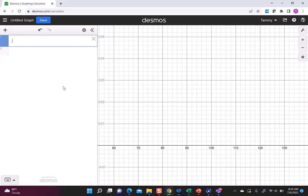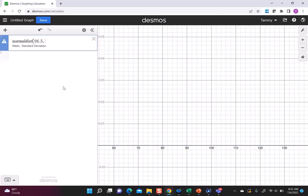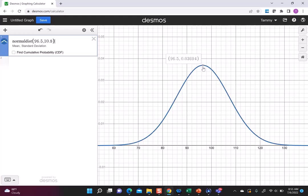So what I'm going to do is I'm going to type in normal dist. There's a normal distribution and it says, what's the mean? What's the standard deviation? So we said the mean was 96.5 and we had a standard deviation of 10.8. So what it drew is a normal distribution with a mean of 96.5, which you can see at the top here. If I click on there, there's 96.5 as the mean median mode, standard deviation of 10.8.